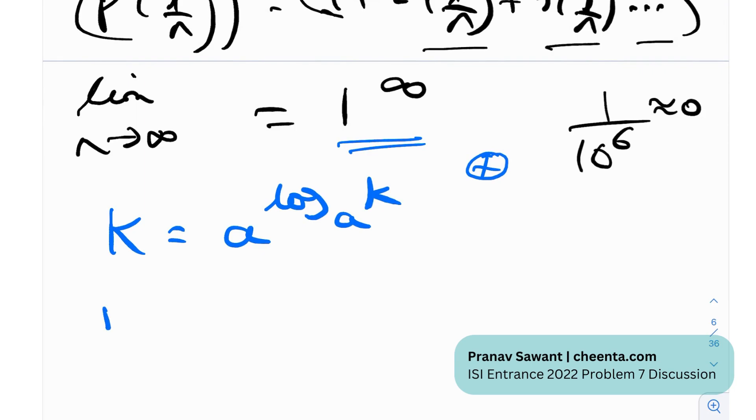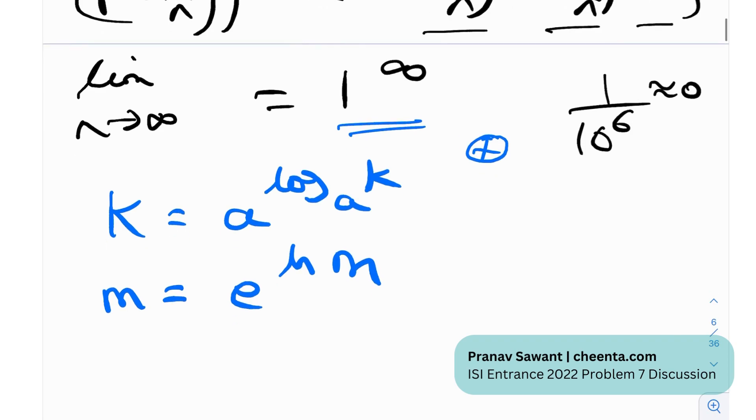So, any number m can be written as e raised to the power ln m, right? As ln is natural log with base e, so this is essentially the same thing. And if we use that, we can actually solve this problem fairly easily now.